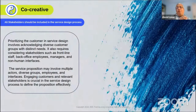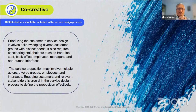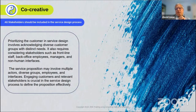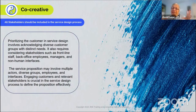Co-creative: all stakeholders need to be included in the service design process. For example, HR onboarding is a service. The design of the process or system providing that service has to be robust enough for different types of employees. You can't have an entirely different onboarding process for a ground-level employee versus senior staff or technical staff from a different vertical — the base design has to be very similar.